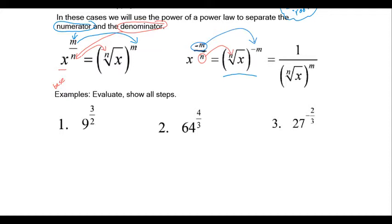Using the rules we just went over, we have 9 to the three-halves. We write this as the second root of 9, because that's our denominator, raised to the 3. The square root of 9 is 3, raised to the power of 3, which is 27. Notice how the result of the rooted part is always kept in a bracket.